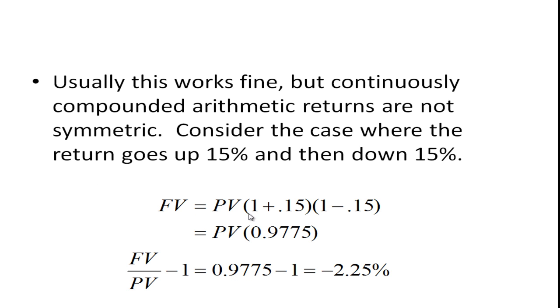If we were looking at the future value, we would say present value times one plus the return, 0.15, then times one plus the return, but the return here is negative 0.15. So if you work that out, it's going to be future value equals present value times 0.9775.